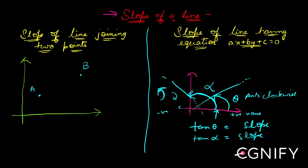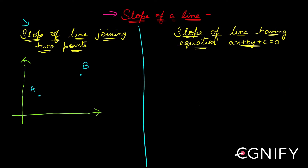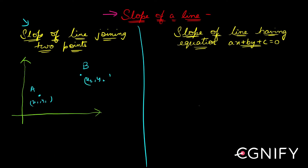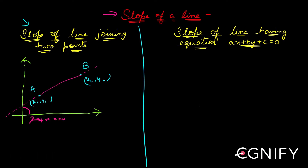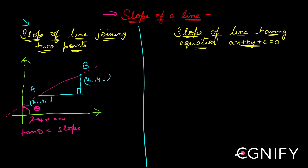Now let's look at the slope of a line joining two points. The coordinates of the first point are (x1, y1) and the second point are (x2, y2). This line will extend both sides. To find the slope, take the positive x-axis, lift it anti-clockwise, and let it rotate by angle theta. Then tan of theta is your slope, so I need to find tan theta.